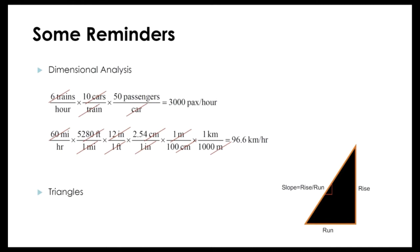An easy example would be converting trains per hour to passengers per hour. Imagine we have six trains per hour, each train has 10 cars, and each car has 50 passengers. We can say: six trains multiplied by 10 cars per train and 50 passengers per car. Trains cancel out, cars cancel out, and we get six times 10 times 50, which is 3,000 passengers per hour.